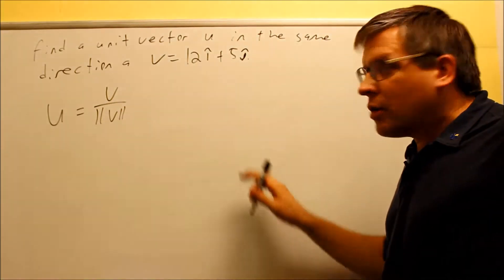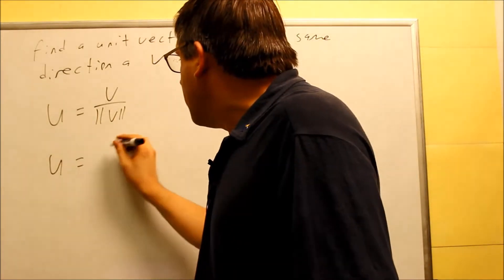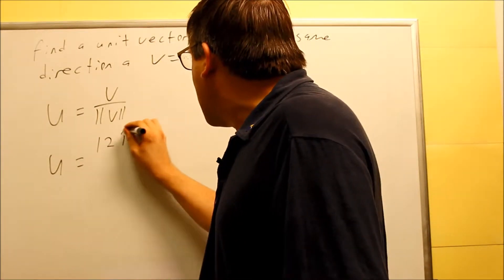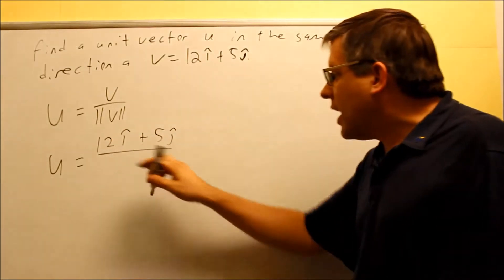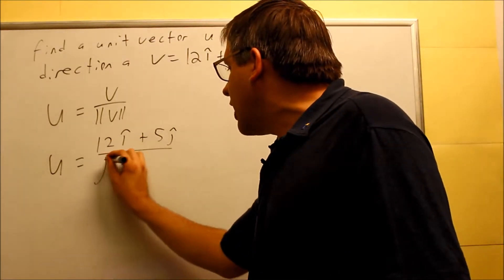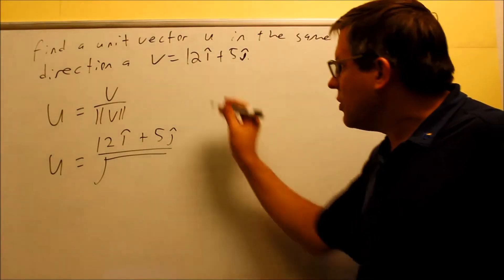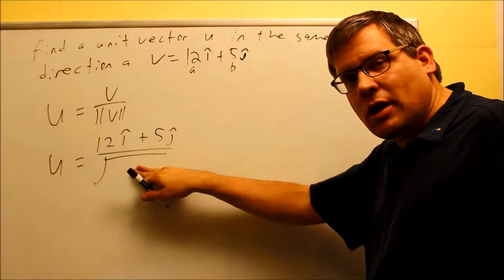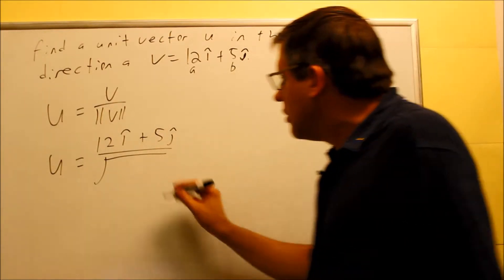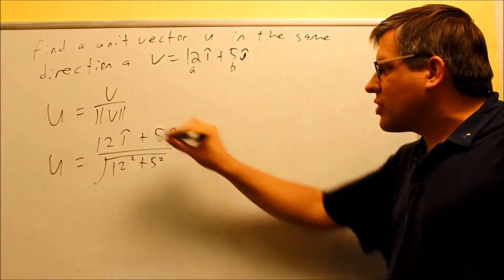So I'm actually going to go ahead and plug in the information into here. So to find the U, I'm going to do the vector V is 12I plus 5J. And on the bottom, I'm going to go ahead and find its magnitude. Now the magnitude is using that formula, the square root of A squared plus B squared. A is 12 and B is 5. So I'm just going to go ahead and substitute that in here. 12 squared plus 5 squared. So that's the setup of the formula.